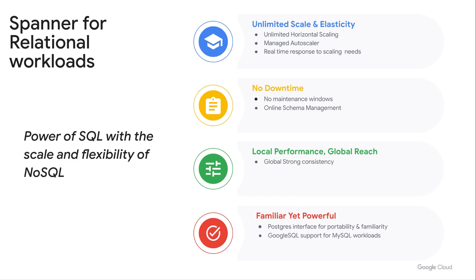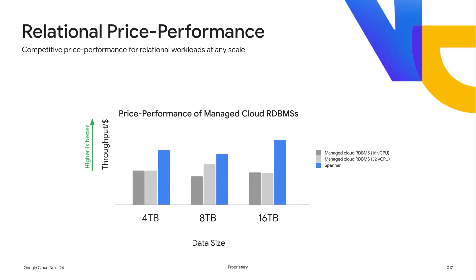Spanner has a Postgres interface giving you the familiarity of Postgres with the superpower of Spanner. With the Google SQL dialect, MySQL customers will feel very familiar and get features like true global transactions and strong consistency. The price performance for relational workloads is also very competitive. Spanner provides competitive price performance across a variety of data sizes and VM configurations using a TPCC relational benchmark, and unlike typical relational databases, you don't have to worry about scaling limits in any dimension.